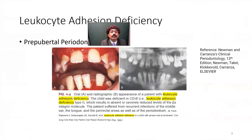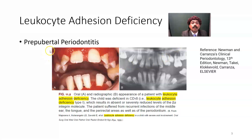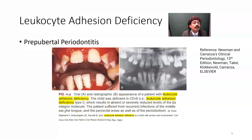In leukocyte adhesion deficiency, we can get pre-pubertal periodontitis — inflammation around the teeth in the gum area. The child is deficient in CD18, indicating leukocyte adhesion deficiency type 1, which results in absence or severely reduced levels of beta-2 integrin molecules, so leukocytes cannot adhere to endothelial cells. The patient suffers from recurrent infection of the middle ear (recurrent otitis media), the tongue (glossitis), the peri-rectal area, and the periodontium, as well as recurrent respiratory infections.